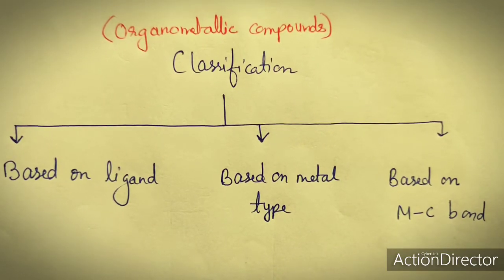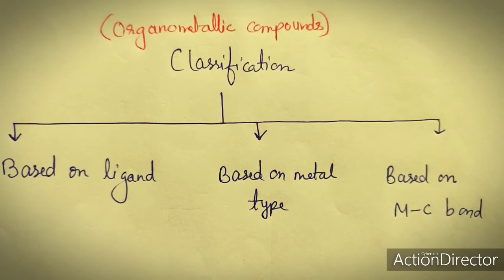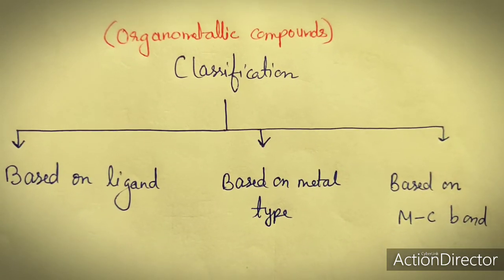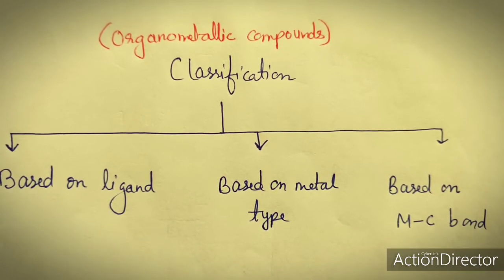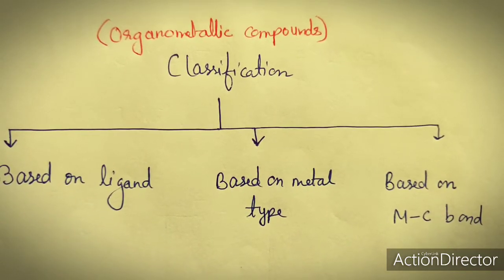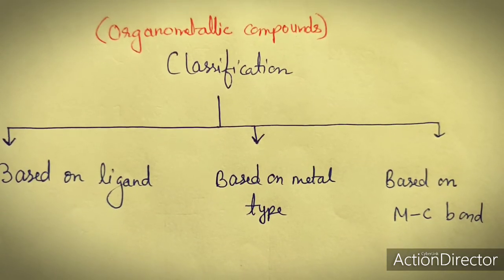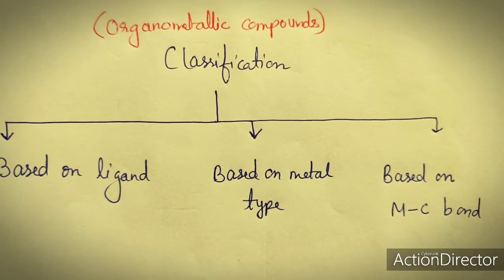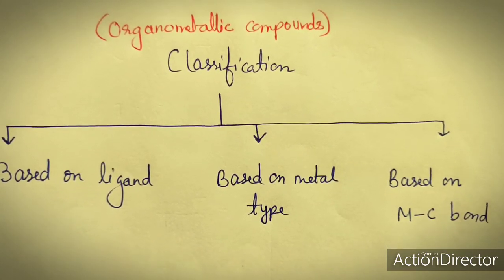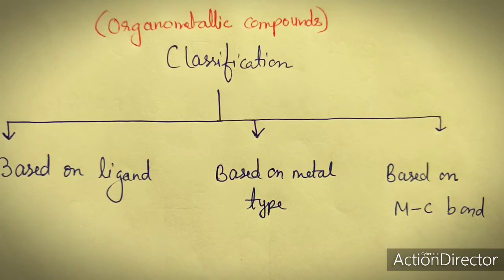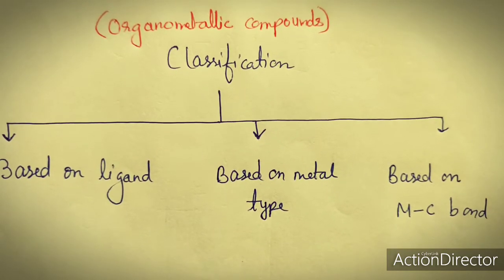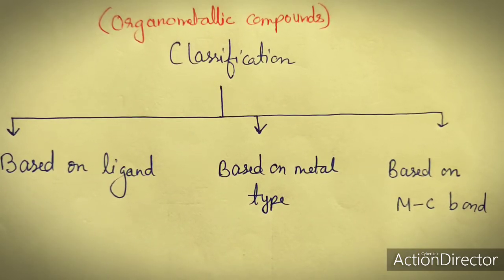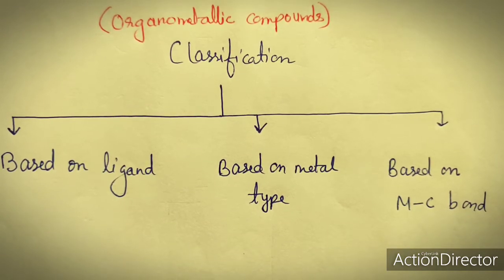In this lecture we will discuss the classification of organometallic compounds. Organometallic compounds can be classified based on the type of ligand, the metal type, and the type of bonding between metal and carbon. So they can be classified into three classes: based on ligand, based on metal type, and based on the MC bond. We will discuss these classifications one by one.